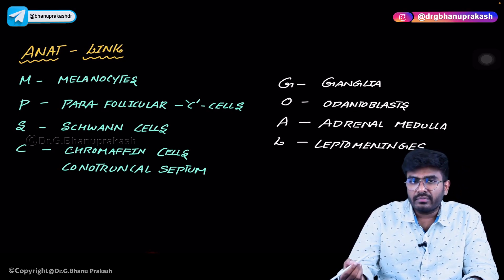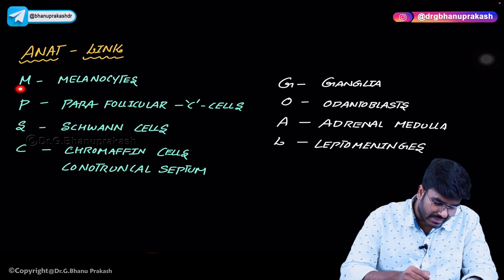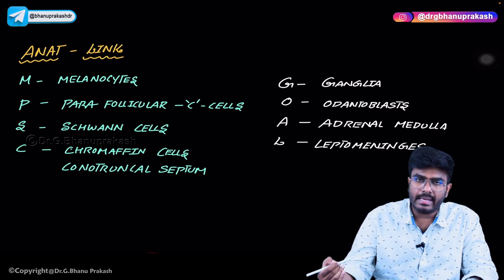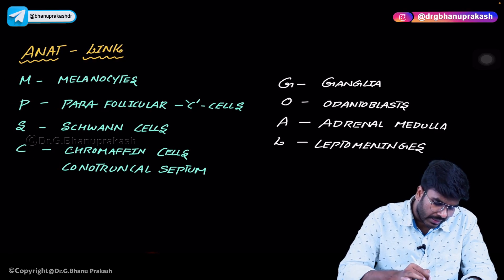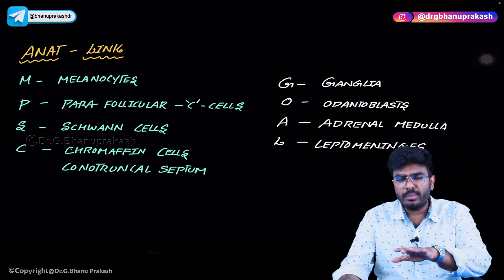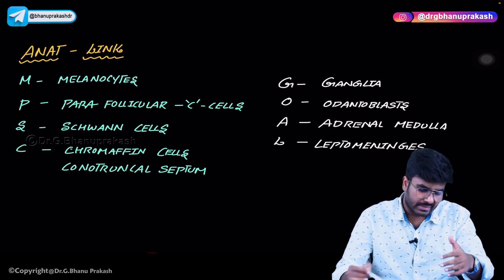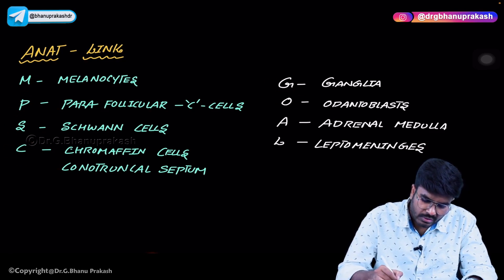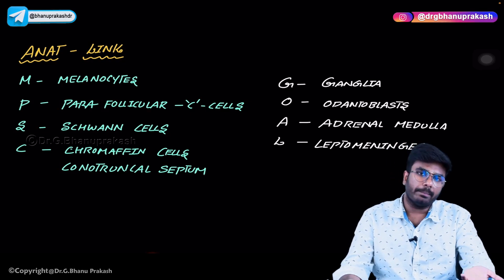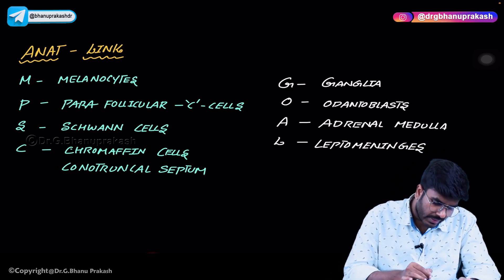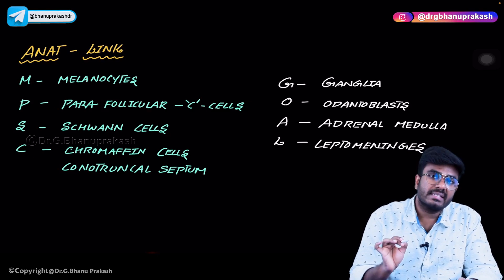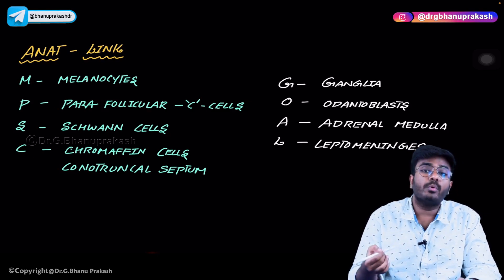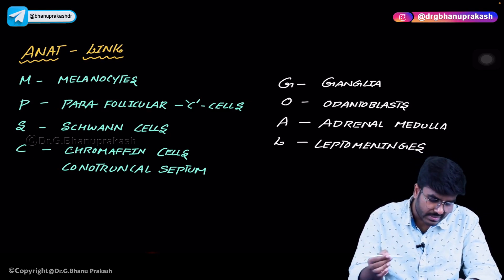I use the mnemonic MPSCGAL — just like the UPSC exam, remember it as MPSCGAL. M is for melanocytes — the melanin-producing cells in the skin are derived from neural crest cells. P is for parafollicular C cells, which are present in the thyroid gland and produce calcitonin, which decreases blood calcium levels.